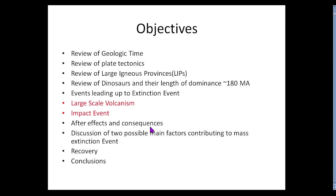We'll discuss the two possible culprits contributing to the mass extinction event: a large igneous province combined with an extraterrestrial impact in the form of an asteroid or something roughly six to nine miles long that slammed into the Earth. Then we'll cover the recovery — which species didn't make it, which species did — and then some conclusions.